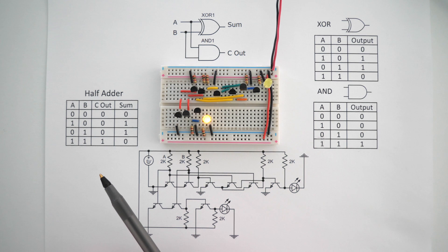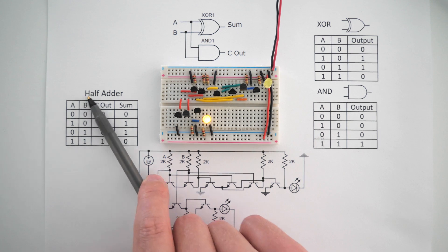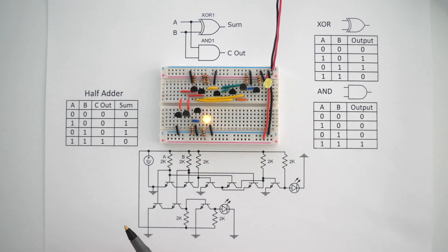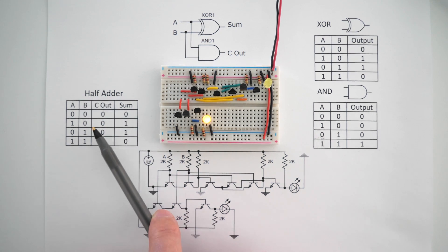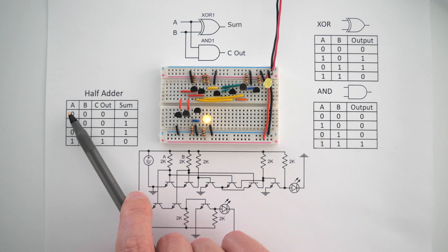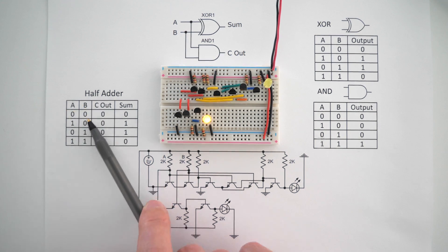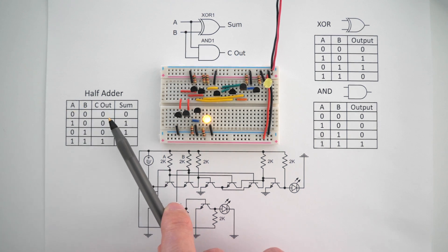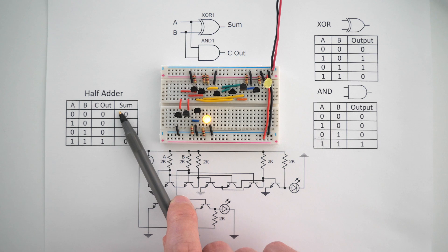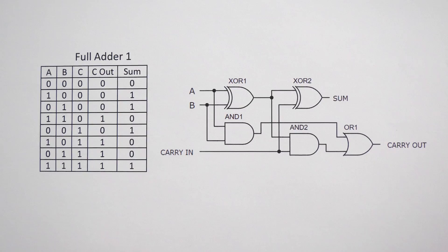By using this exclusive OR gate and AND gate, we are able to get the values in this truth table for a half adder. But what we really want to build is a full adder. With a full adder, we're going to have one more input — inputs A, B, and C — and our outputs are going to be the same: carry out and sum.